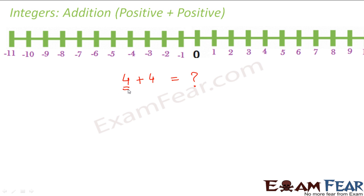The given number here is 4, so we are at 4. We are adding a positive number to it, so we will move towards right. How many jumps? 4 jumps. So where do we reach? We reach at 8. So the result would be 8.